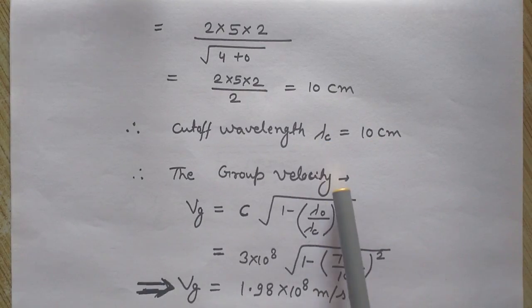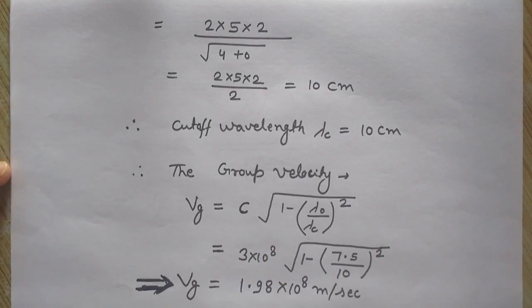Now I want to calculate the group velocity. The formula, VG stands for the group velocity. The formula for the group velocity is C under root of 1 minus lambda 0 by lambda C whole square. Here I know each parameter, that is C is 3 into 10 to the power 8, velocity of light in vacuum.